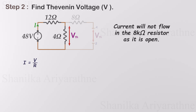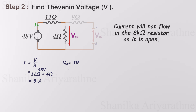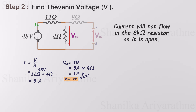The current flowing through the loop is equal to the voltage divided by resistance. We get the current as 3 amperes. Now we can use Ohm's law to calculate the voltage across the 4 ohm resistor, which is 12 volts. Therefore, 12 volts will appear across the AB terminals. This is the Thevenin voltage.